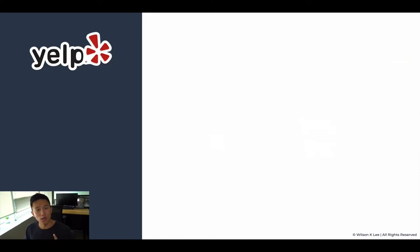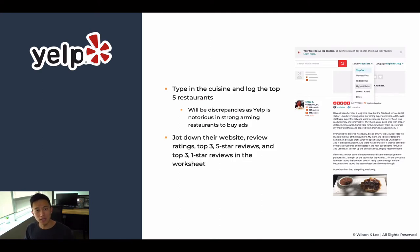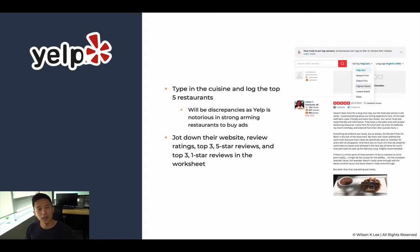After you jot those down, go on Yelp and do the same thing — type in the cuisine and log the top five restaurants that pop up. There will be discrepancy, as Yelp is going to be different from Google; they're just two different platforms. On top of that, Yelp usually strong-arms restaurants into signing up for ads and thus pushes their ranking a little bit higher. Google is a little bit different, which is why there will be discrepancy. Jot down the website, the review ratings, and also the top three one-star and top three five-star reviews as well.